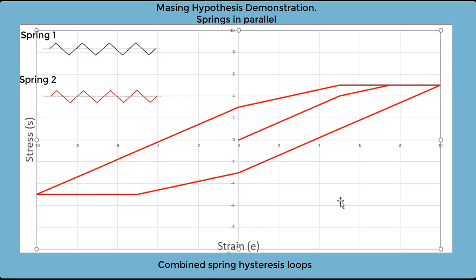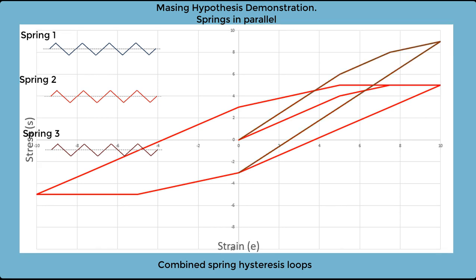Now let's clear the hysteresis loop of spring 1 on its own from the picture. Now we're going to overlay or combine spring 3 into the system, and then look at the combined hysteresis response. First thing we'll do is load and unload. We start off elastically with the three combined stiffnesses. Then spring 1 yields, and we have a drop in the stiffness. Spring 2 yields, and we have a further drop in the stiffness. And finally we have an elastic response as we unload.